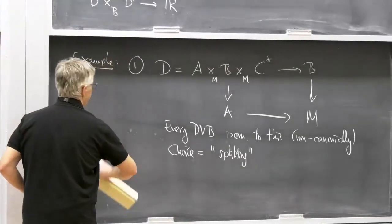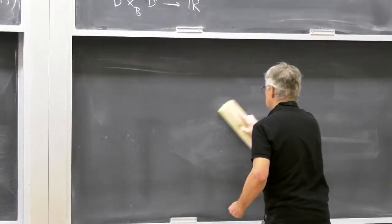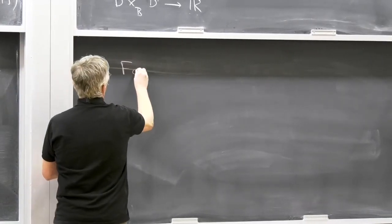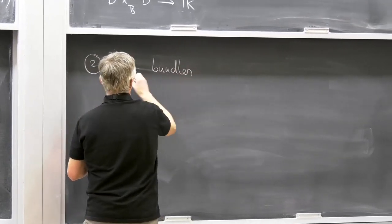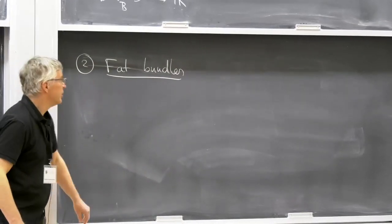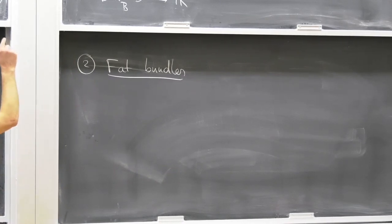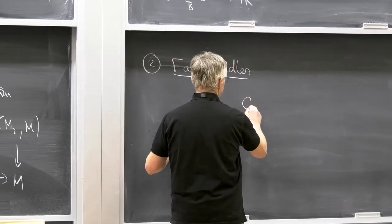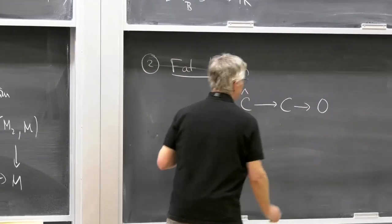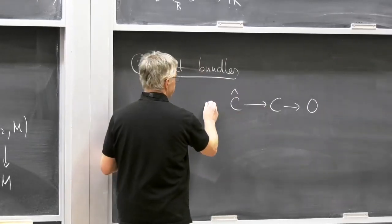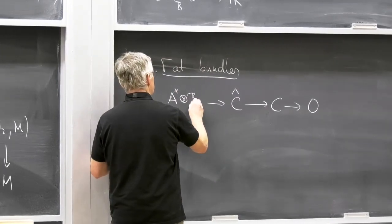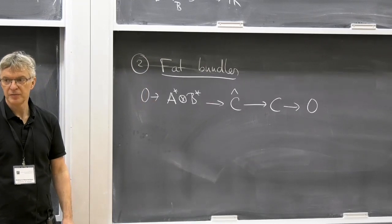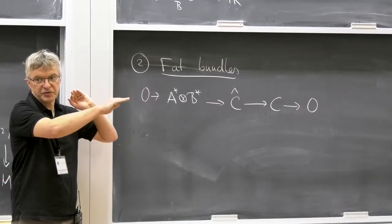Another thing I'm going to need is the so-called fat bundles. I think this name comes from the paper of Gracia-Saz and Mehta. For each of A, B, C, there's some extension. So C has an extension — I call it C-hat — and it's an extension by A-star tensor B-star. This is an exact sequence of vector bundles over M.